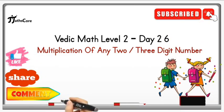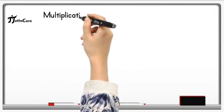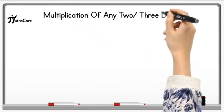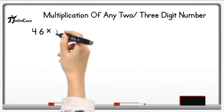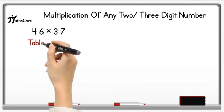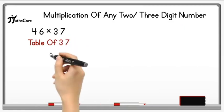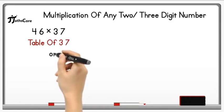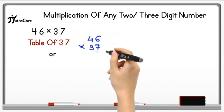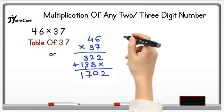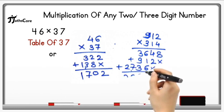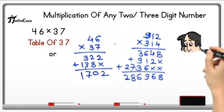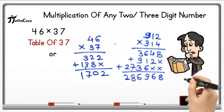Let us discuss multiplication of any 2 or 3 digit number. Example is 46 × 37. To solve this example, either you know table of 37 or you need to follow a two-step traditional method which contains lots of calculation and is time consuming. Same thing happens when you multiply any 3 digit number with 3 digit number - you need to follow a three-step method which is complicated and a little bit time consuming.